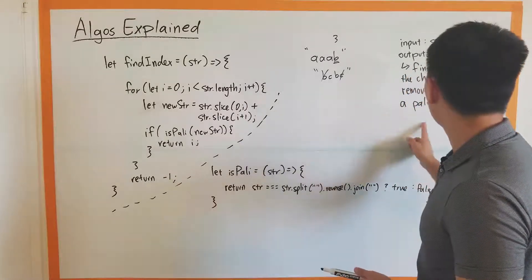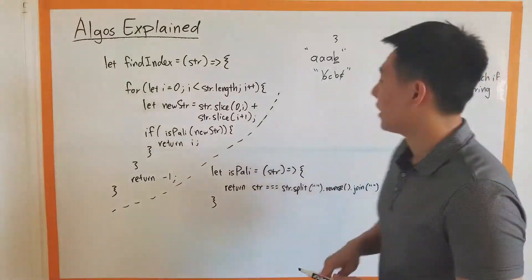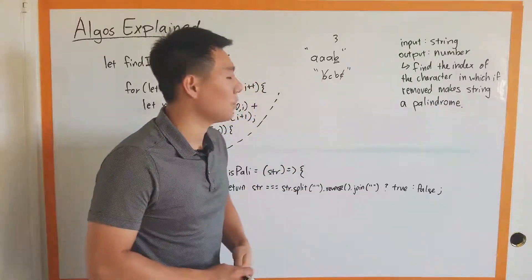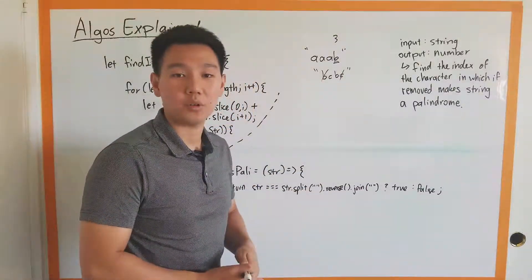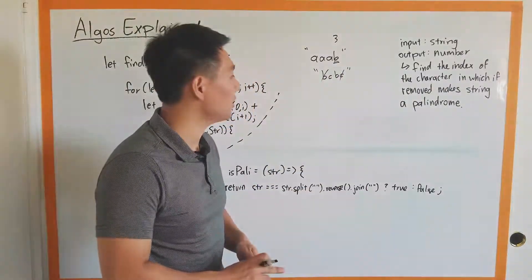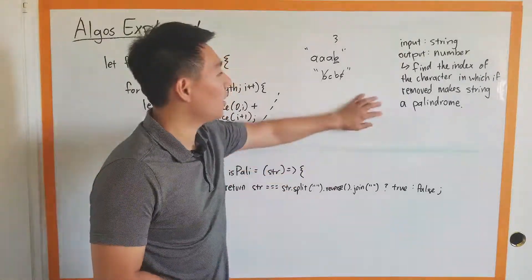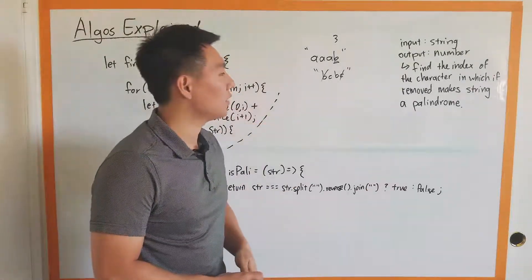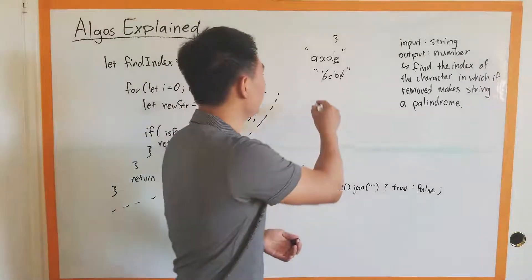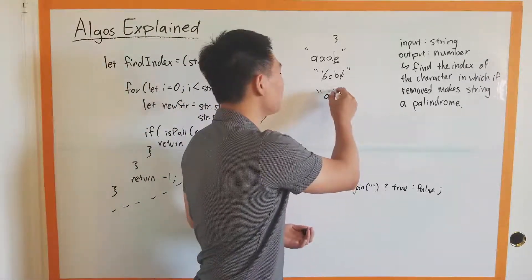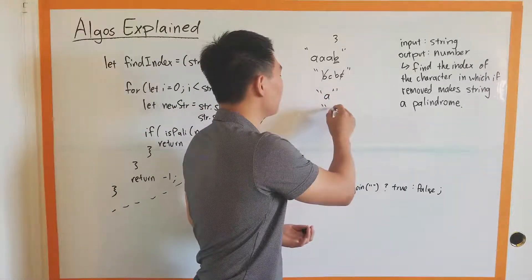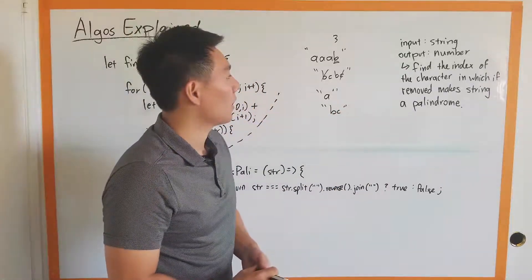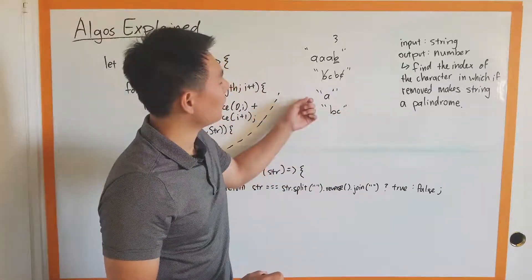If something is not stated in this problem description, that's maybe something you should be asking the person giving you the question if they haven't clarified. A good question is: what happens if nothing can be taken out? What if it's just a single letter or what if it's two letters?